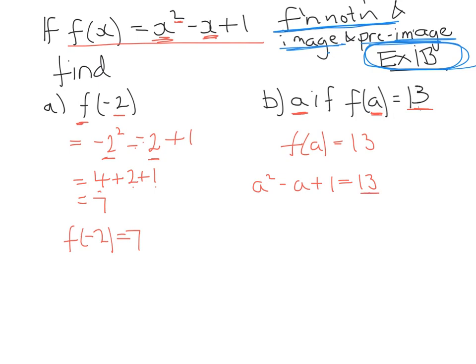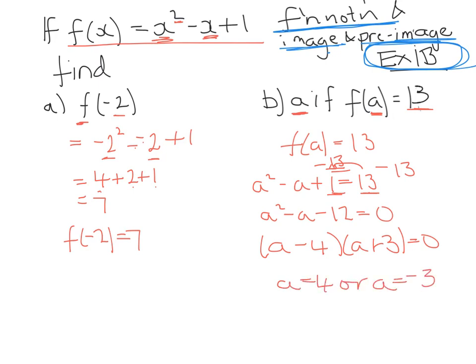Now this looks like a quadratic, so I'll take this 13 across to the other side. So a squared minus a minus 12, because if I've taken away 13 from both sides, 1 take away 13 will be minus 12. Now if I factorize this, this will be a minus 4 and a plus 3, which means a could be equal to 4 or a could be equal to minus 3. So I could have put in either 4 or minus 3 to get out a result of 13.